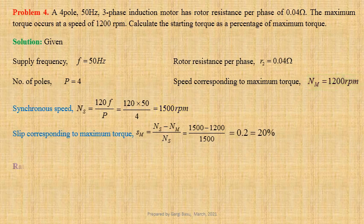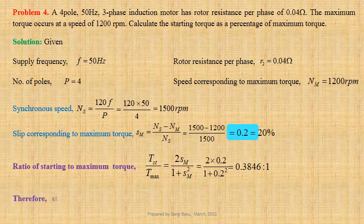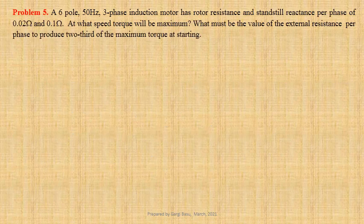Expression for ratio of starting torque to maximum torque TST is to Tmax equals 2 SM divided by 1 plus SM squared. Using value of SM we get 2 into 0.2 divided by 1 plus 0.2 squared, that gives us 0.3846 is to 1. Therefore, we can conclude that starting torque is 38.46 percent of the maximum torque.